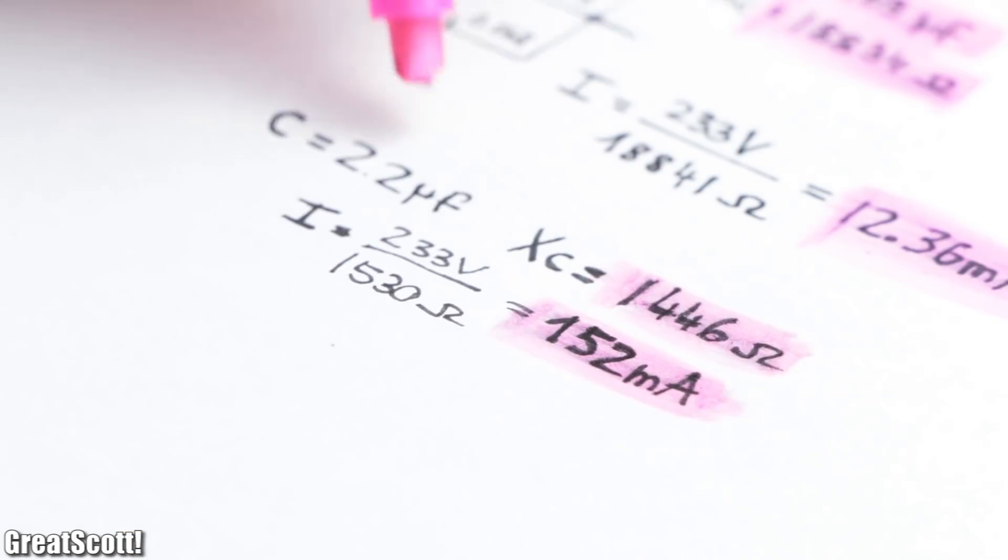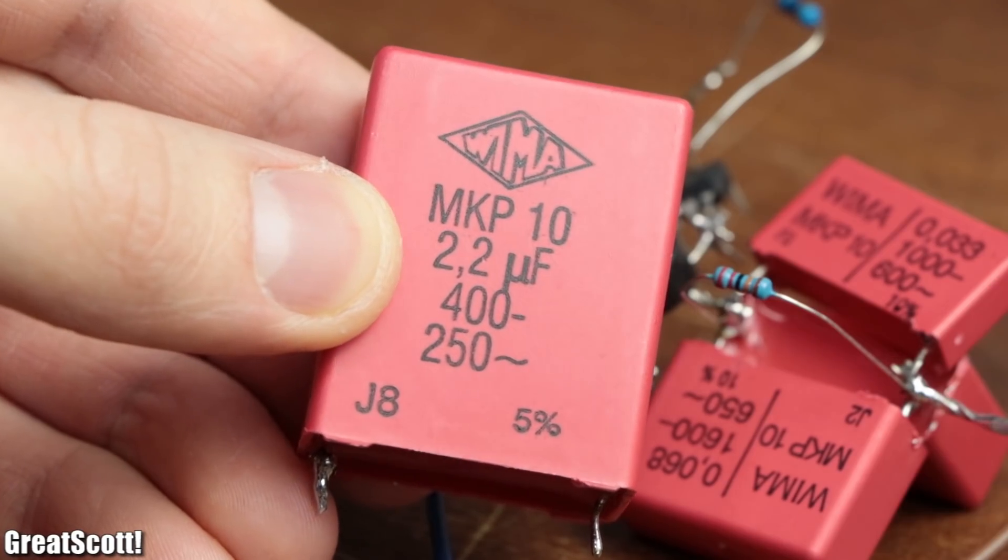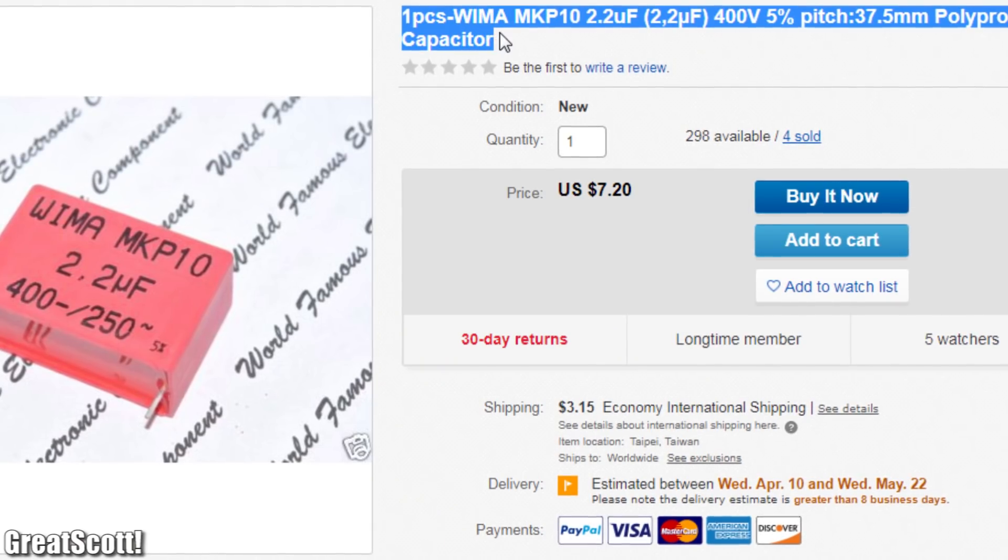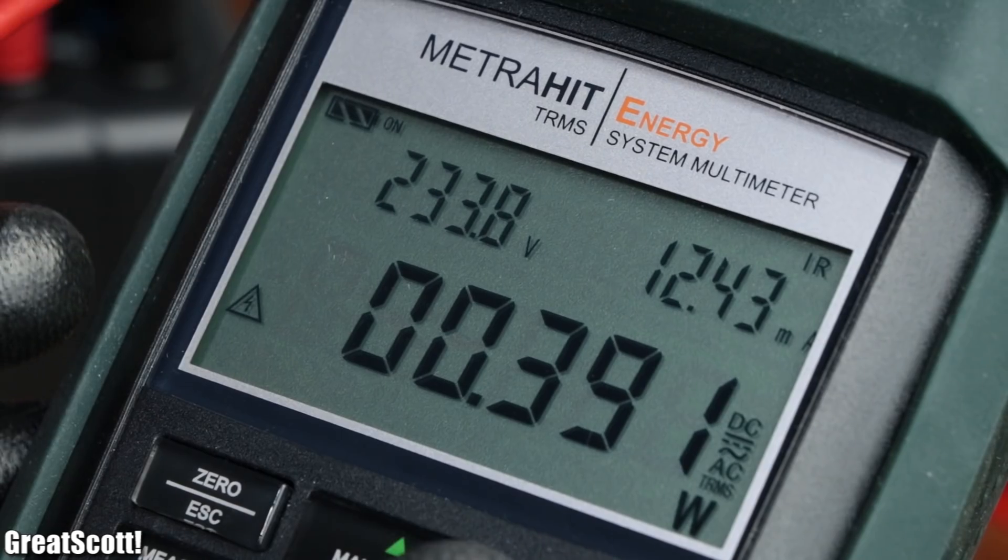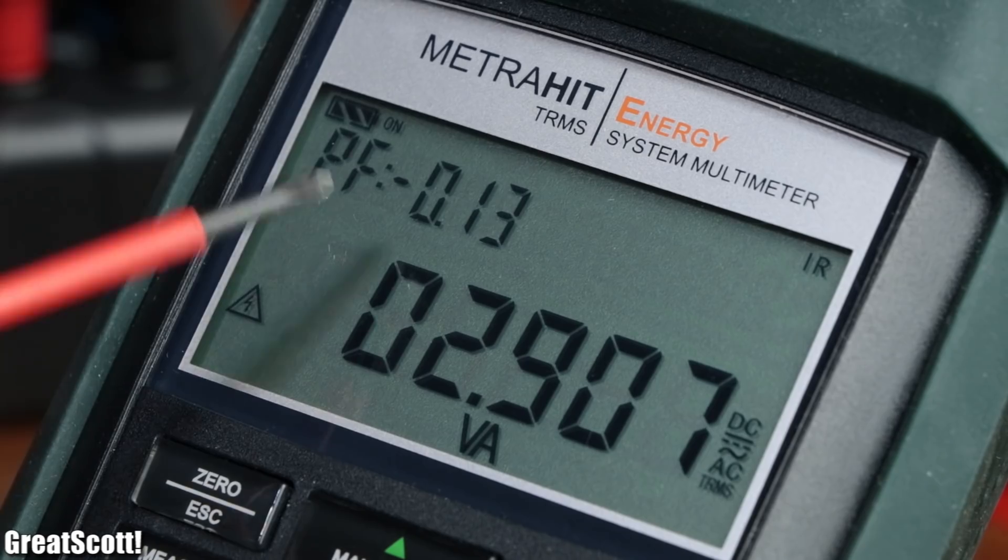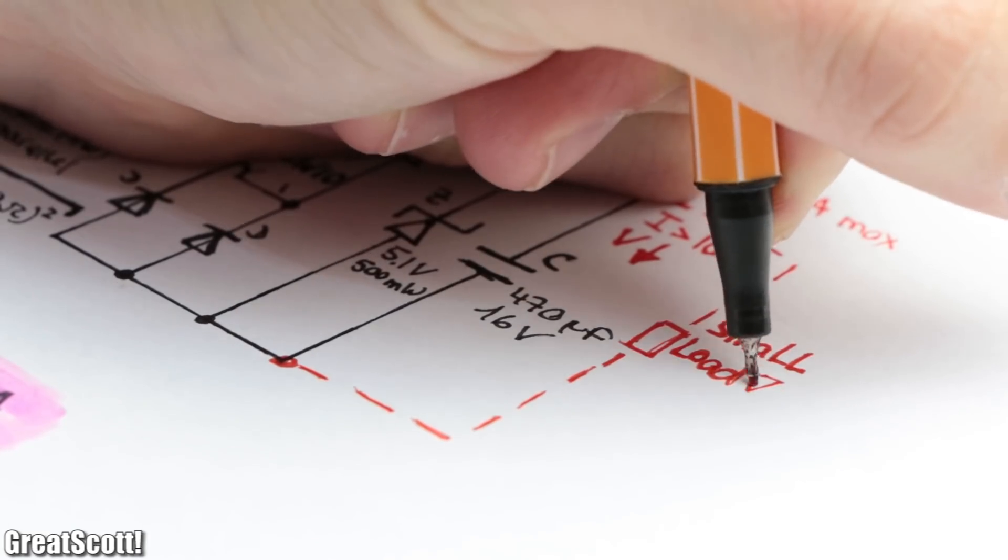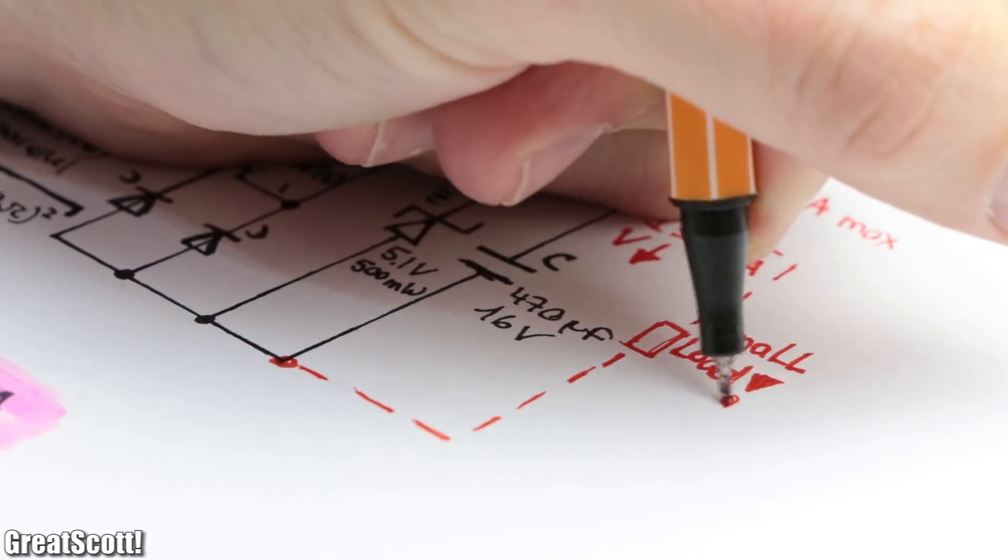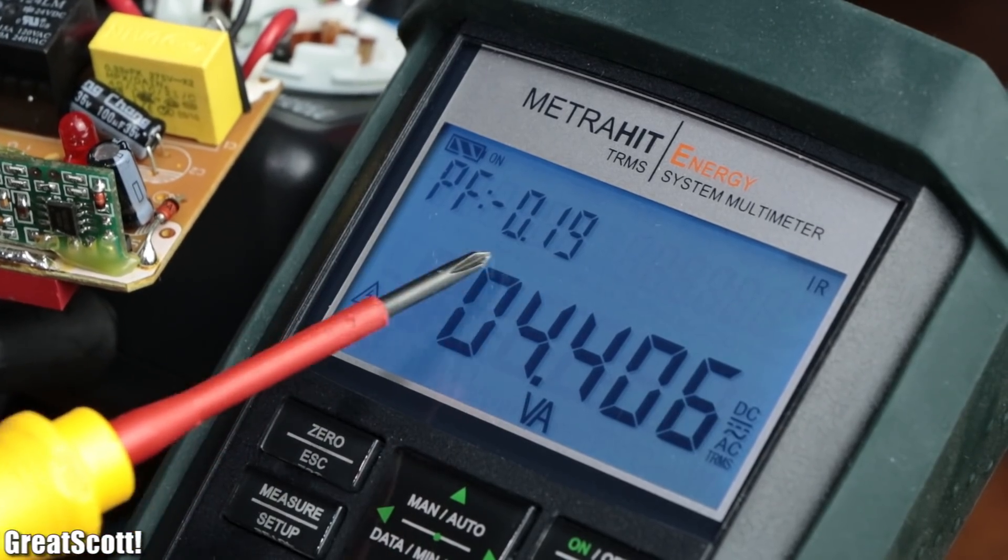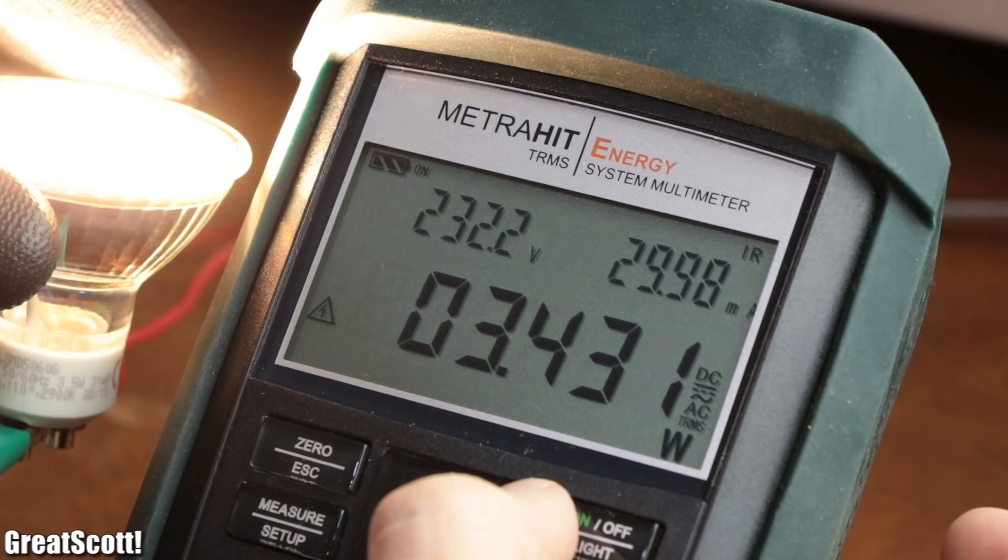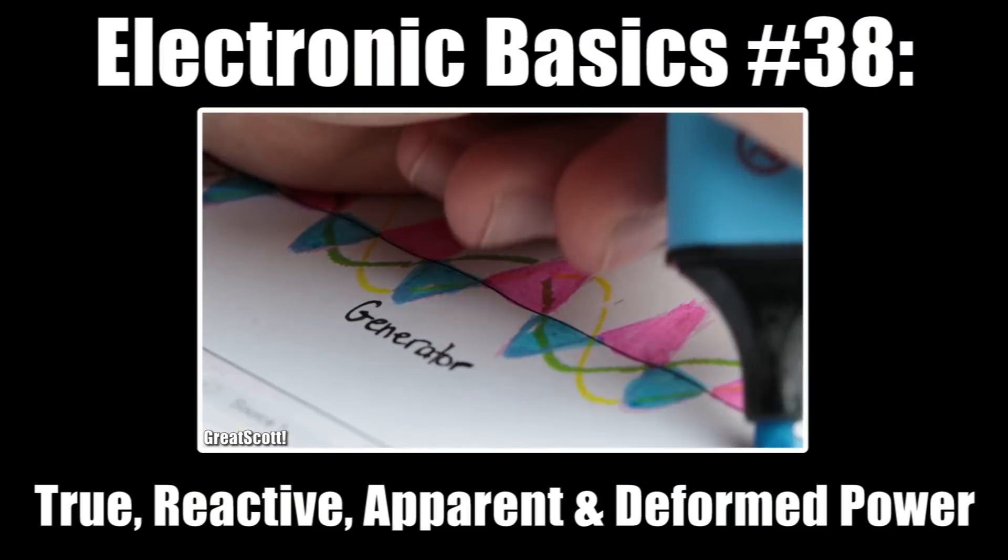If we require more current though, we would need higher capacitances and thus also physically bigger capacitors, which are not only quite expensive but also do not save a lot of space. Combine that with the fact that the created power factor of such capacitive droppers will always be terrible, and you realize that such power supplies are only intended for small loads. By the way, if you didn't understand why a poor power factor is not desirable and basically strains our power grids, then have a look at my basics video about reactive power.